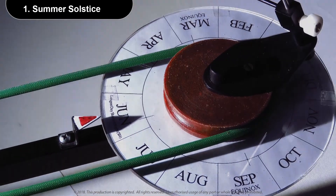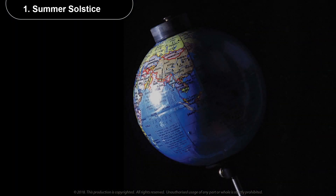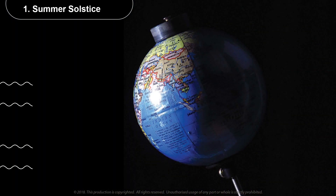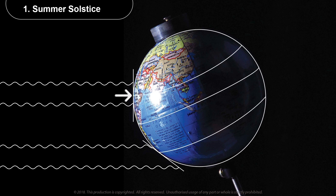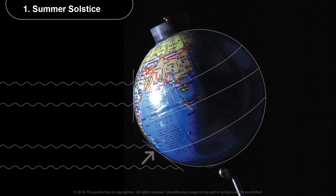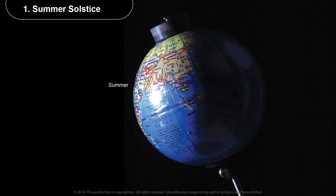This is the summer solstice. Notice that at noon, the light from the lamp is falling normally at the Tropic of Cancer, corresponding to latitude 23.5 degrees north, and as we go away from this latitude the light falls in an inclined manner. Therefore, the northern hemisphere experiences summer, and the southern hemisphere experiences winter during the same period.